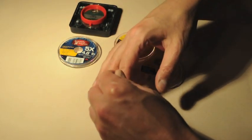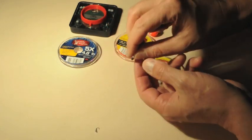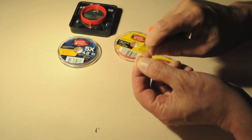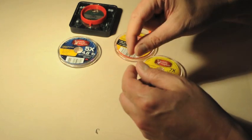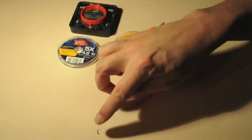When we put that split shot on there, we want something to stop it, otherwise it'll just keep sliding down the leader. I've got a little knot here that can be a stopper knot, or you can even take your tippet and cut it and retie it.